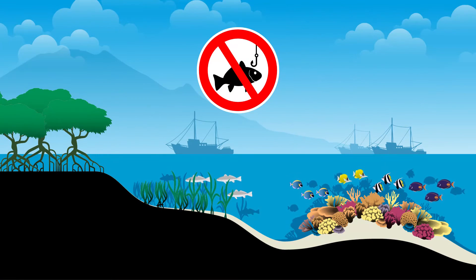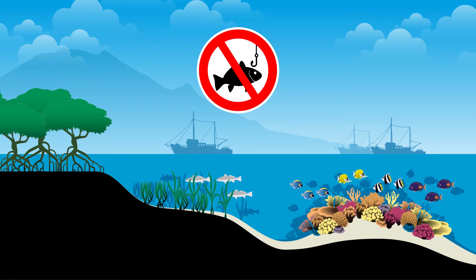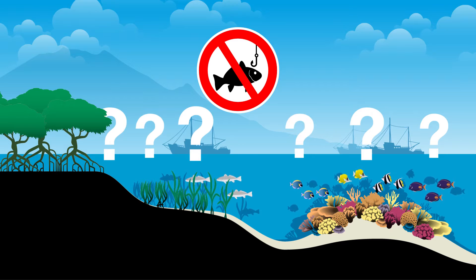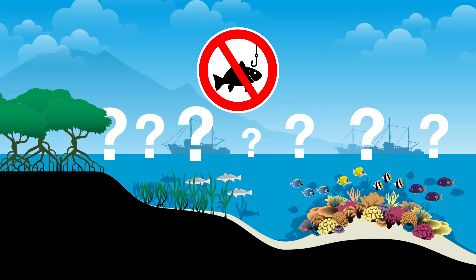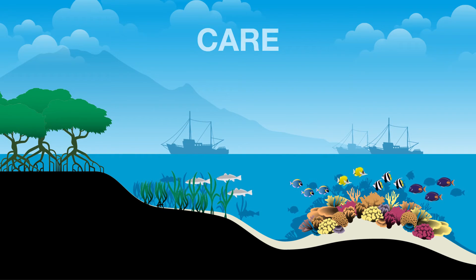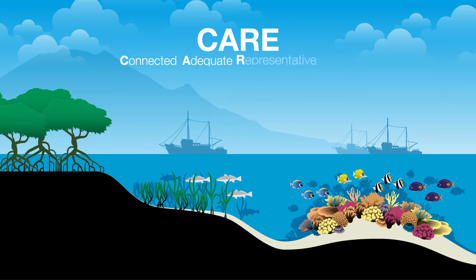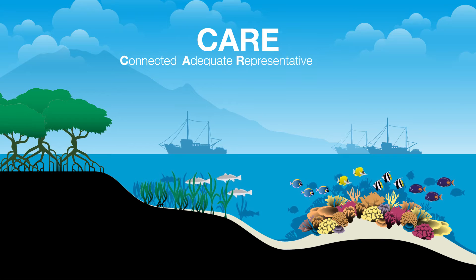Establishing no-take marine reserves is one way to curb the decline of biodiversity. But determining which areas to protect and how to prioritize management actions in space can be very complicated. So we use the word CARE to help us remember the fundamental principles for a conservation plan that will protect biodiversity and the livelihoods of people who depend on it.